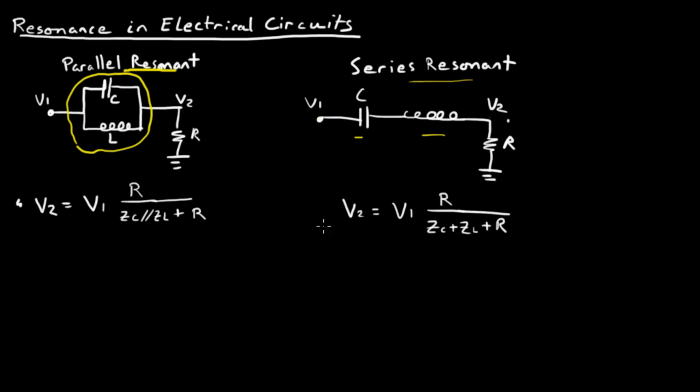I've written here and here the expressions for V2, voltage 2 here, as a function of voltage 1. Here's voltage 1, here's voltage 2. For the parallel resonant case, V2 equals V1 and we just have a voltage divider here. So it's going to be R, the load in the numerator,